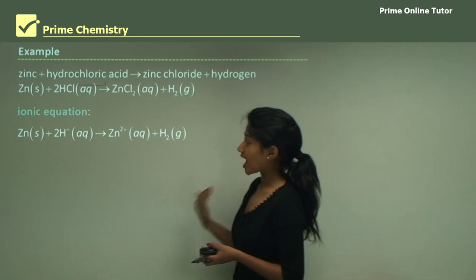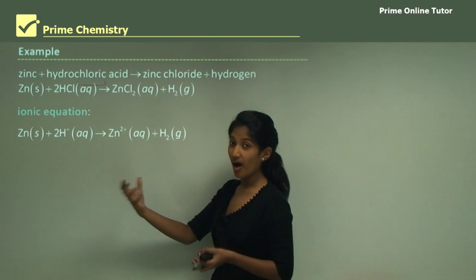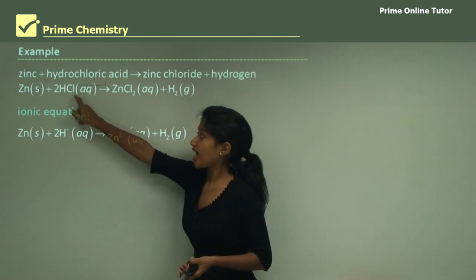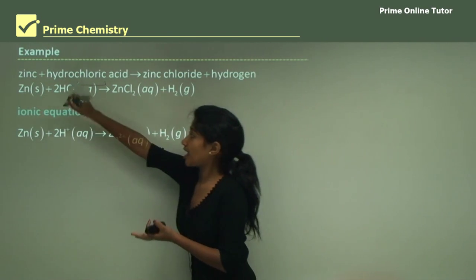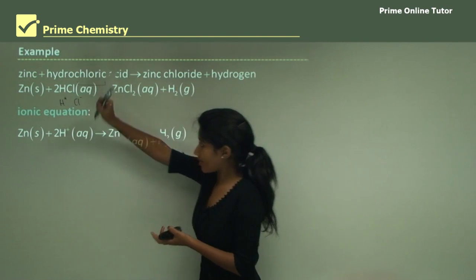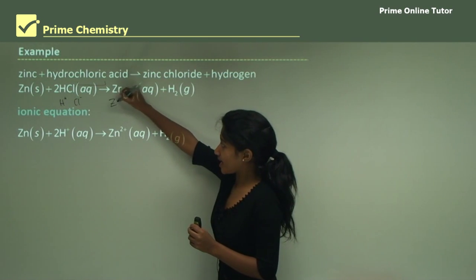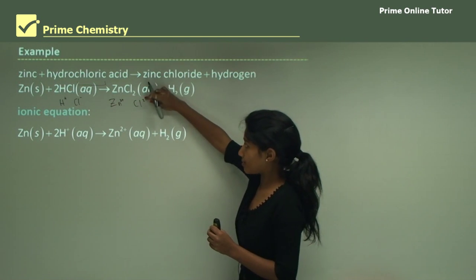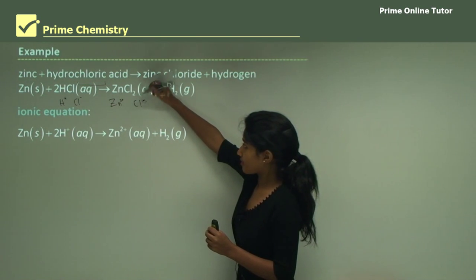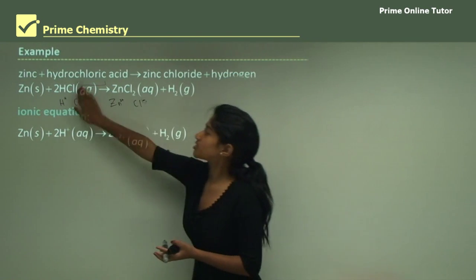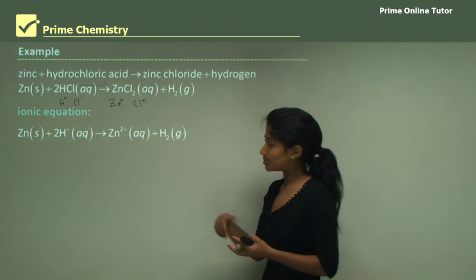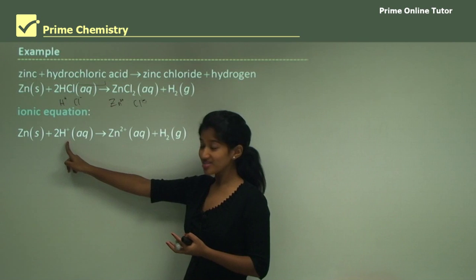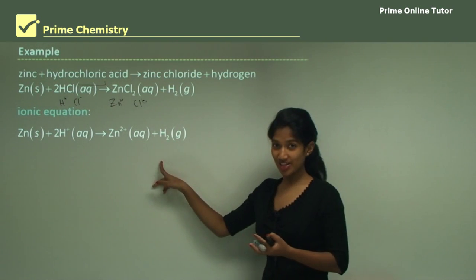When writing an ionic equation, we first split up our ionic compounds. So we have HCl split into H⁺ and Cl⁻ ions. Here we also have Zn²⁺ and Cl⁻. We cross out the Cl⁻ ions on both sides, and the net ionic equation becomes: Zn + H⁺ → Zn²⁺ ions and hydrogen gas.